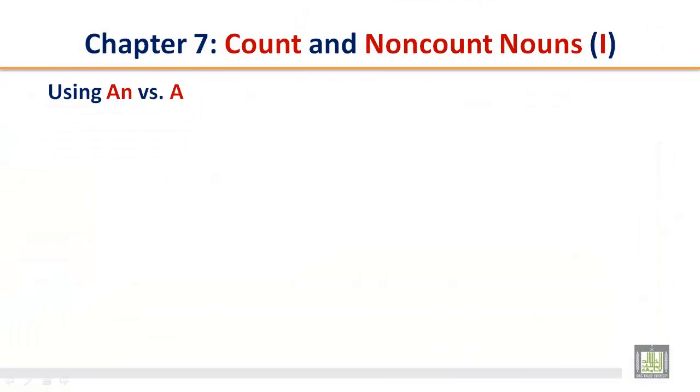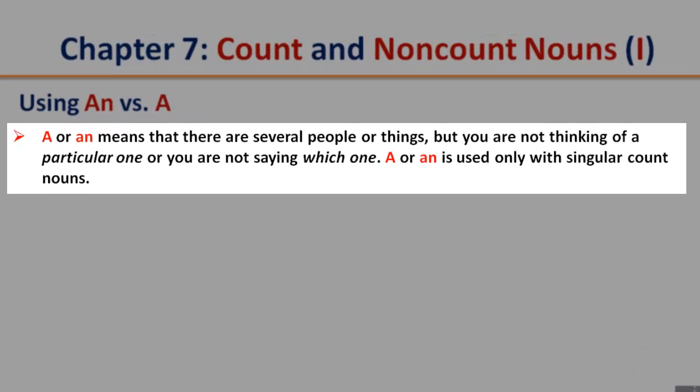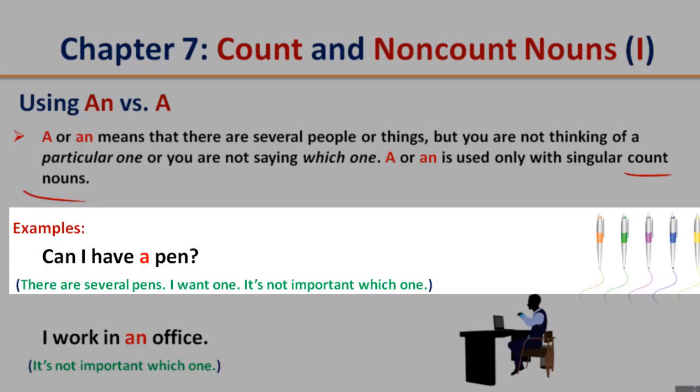Using an versus a. A or an means that there are several people or things, but you are not thinking of a particular one, or you are not saying which one. A or an is used only with singular count nouns.